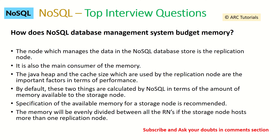How does a NoSQL database management system budget memory? This is an important question asked in almost all interviews. The node that manages data in the NoSQL database store is the replication node, which is also the main consumer of memory. The Java heap and cache size used by the replication nodes are very important factors for performance. By default, these are calculated by NoSQL based on the amount of memory available to the storage node. If the storage node hosts more than one replication node, memory will be evenly divided between all replication nodes.